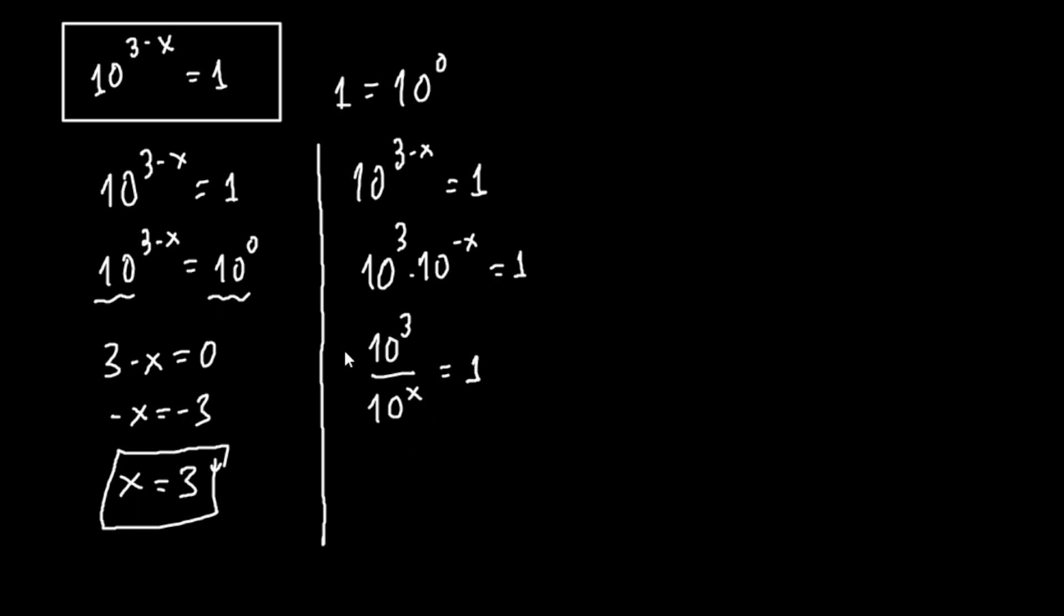We multiply both sides with 10 to the x, so we have 10 to the x here times 10 to the x. This and this is 1, so we have 10 to the 3rd power equals 10 to the x.